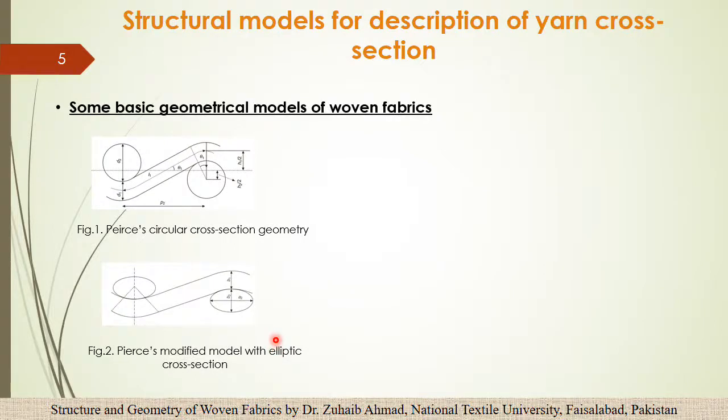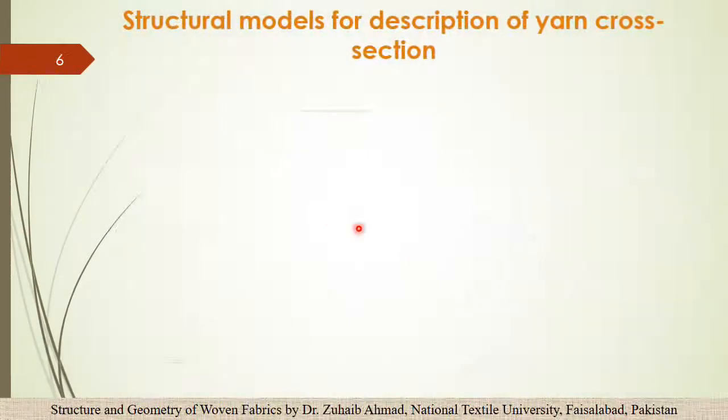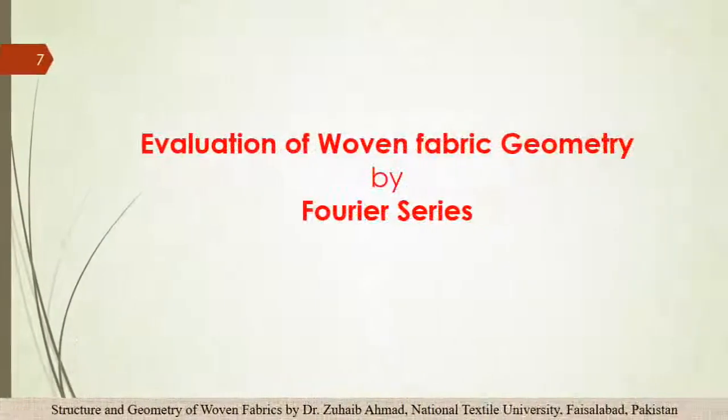We have different structural models like Peirce's circular cross sectional model, the modified elliptical model, Kemp's ray strike section, Hull's lenticular cross sectional model. Then we have the description of binding wave in the fabric by Fourier mathematical model, schematic correspondence, and some other different models. We will not go into the details because of the shortage of the time, so I will skip it.